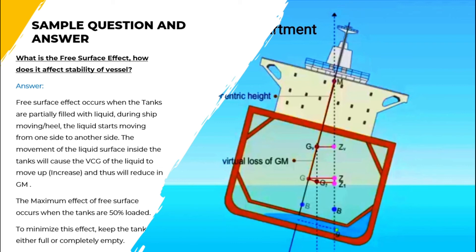What is the free surface effect and how does it affect the stability of the vessel? The free surface effect occurs when tanks are partially filled with liquid. During ship movement and heeling, the liquid starts moving from one side to another. The movement of the liquid surface inside the tank causes the VCG of the liquid to move up or increase, which reduces the GM value. The maximum effect of free surface occurs when the tank is 50% loaded. To minimize this effect, keep the tank either full or completely empty.